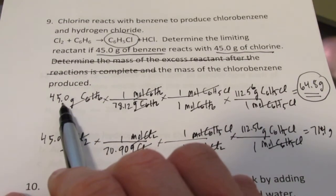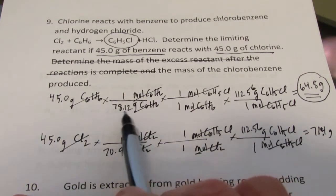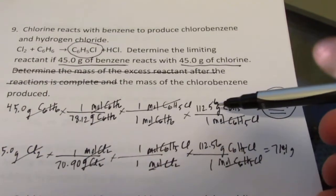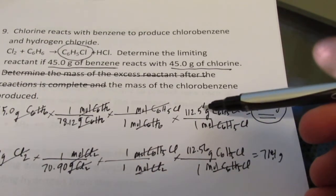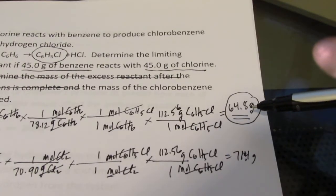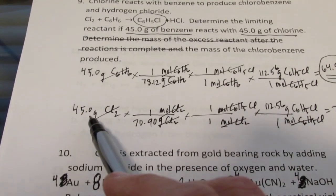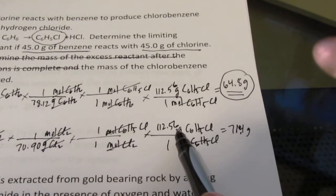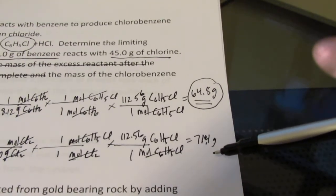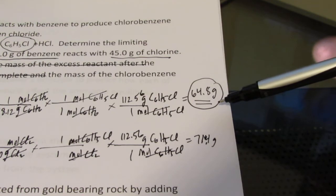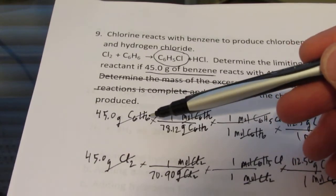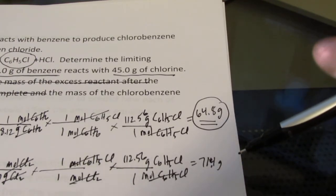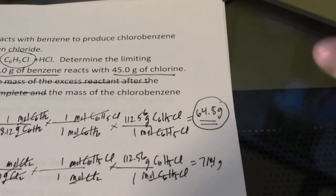And then I'll go from moles of product to grams. The chlorobenzene is the weight of six carbons, five hydrogens and a chlorine added together, which is 112.56 grams per mole. So I did the math. I took 45 divided by 78.12, then multiplied by 112.56, and I got 64.8. Then I did the same thing for the chlorine. 45 divided by 70.90 times 112.56, and I got 71.4. So the one that makes the least amount of product is my limiting reactant. So C₆H₆ was my limiting reactant, and it would allow me to make 64.8 grams of chlorobenzene.